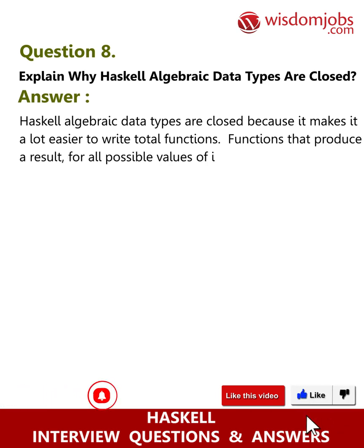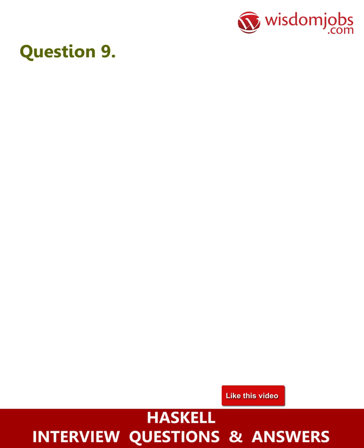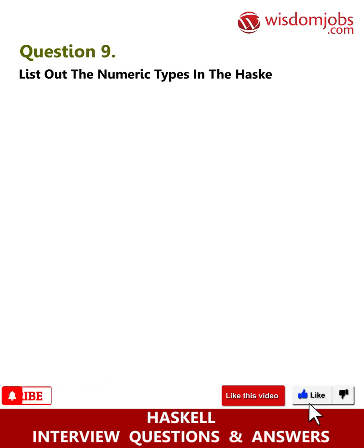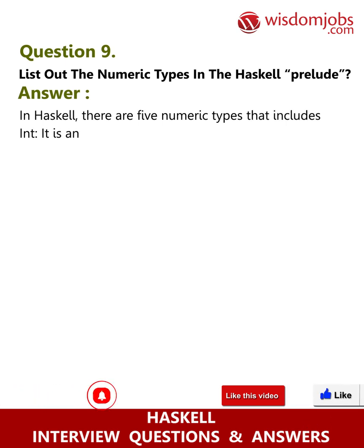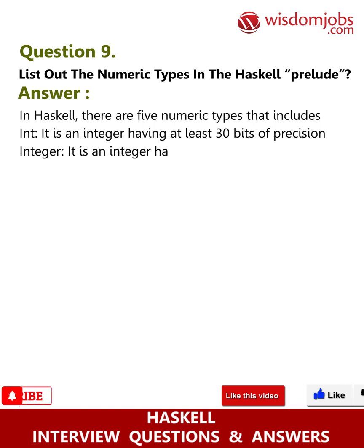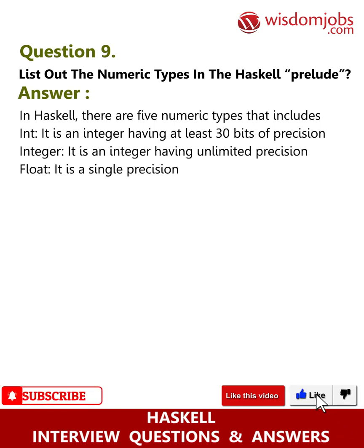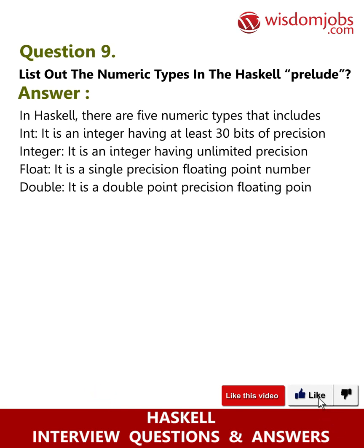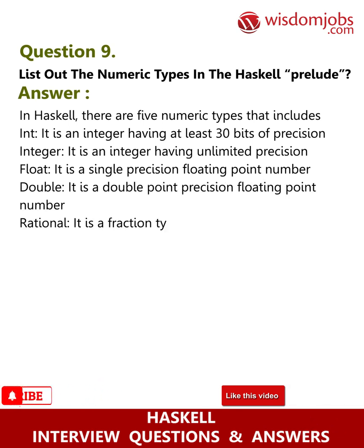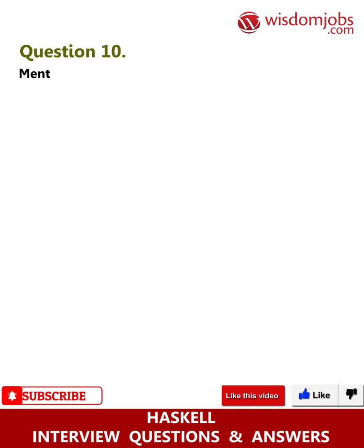Question 9: List out the numeric types in the Haskell prelude. Answer: In Haskell there are five numeric types: Int — an integer having at least 30 bits of precision; Integer — an integer having unlimited precision; Float — a single precision floating point number; Double — a double precision floating point number; Rational — a fraction type with no rounding error.